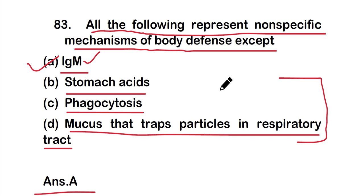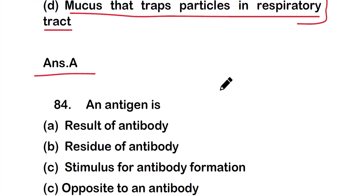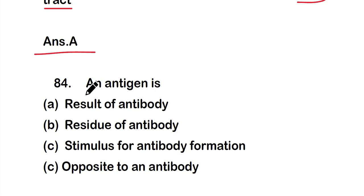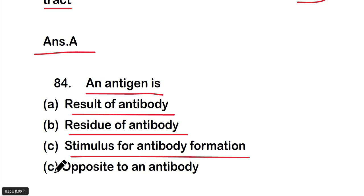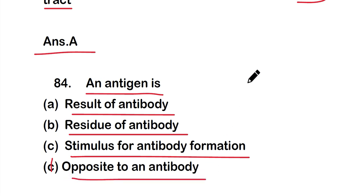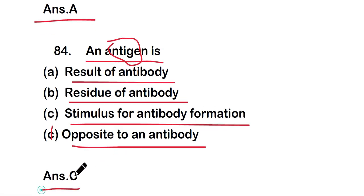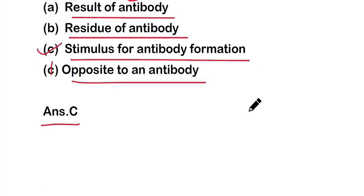Question number 84: An antigen is — option A: result of antibody, option B: residue of antibody, option C: stimulus for antibody formation, or option D: opposite to an antibody. The right answer is option C — antigens are the stimulus for antibody formation.